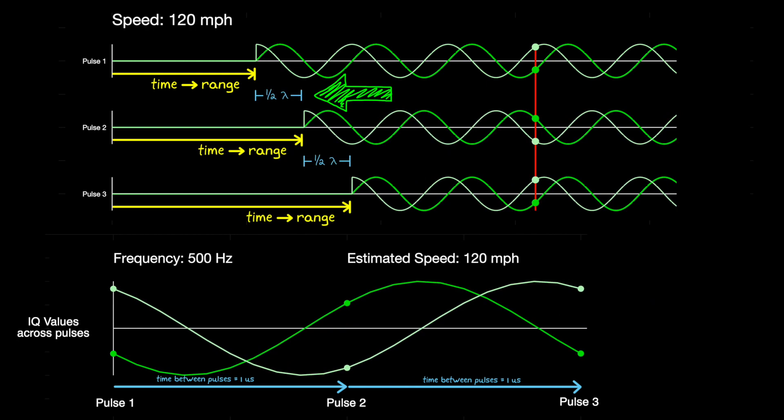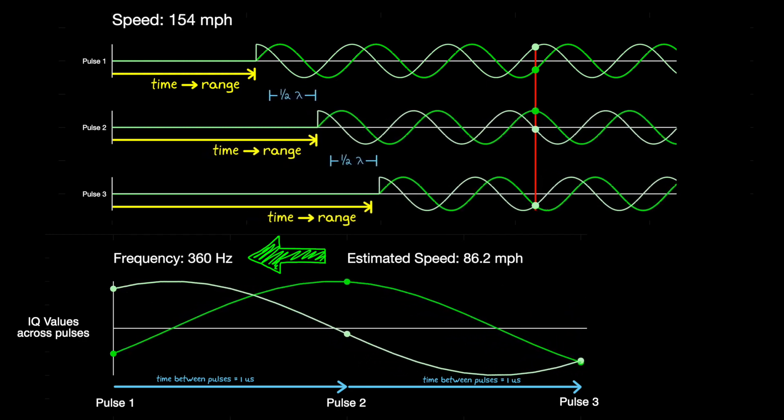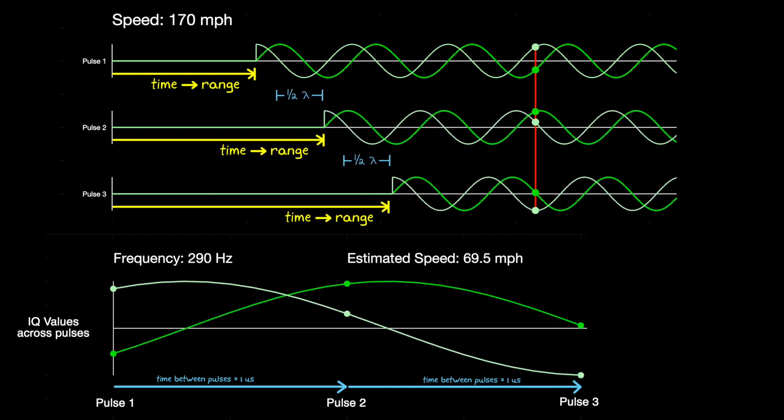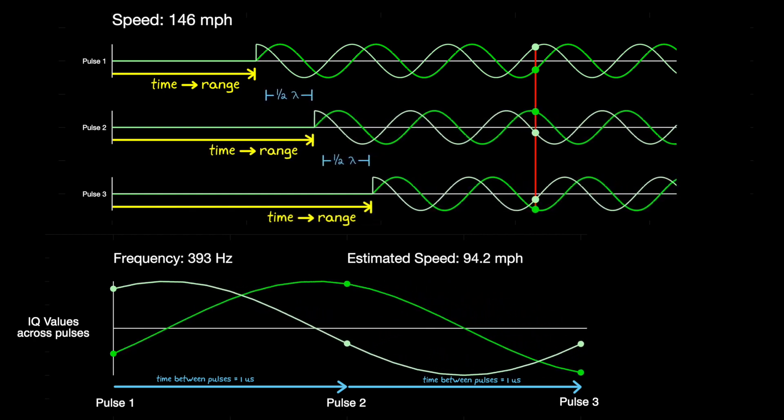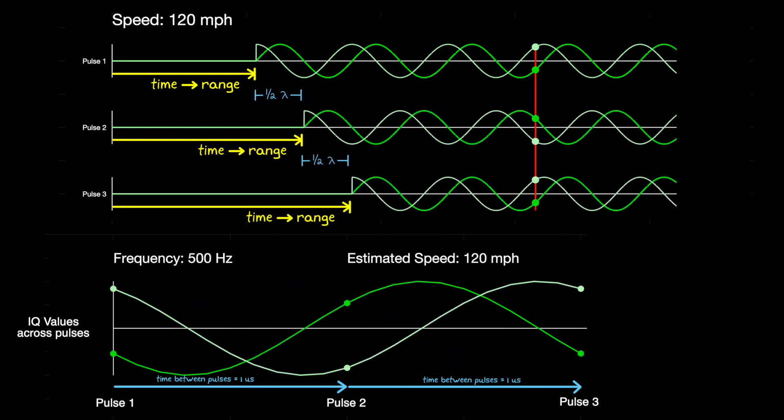At least up until a point. If the velocity increases too much, then the time delay between pulses will increase by more than half a wavelength. And when that happens, the Doppler frequency starts to decrease again with this method. So the velocity that produces exactly half a wavelength of delay between pulses is called the max unambiguous velocity of the radar.